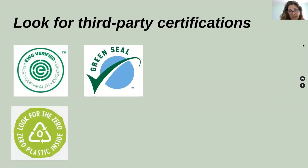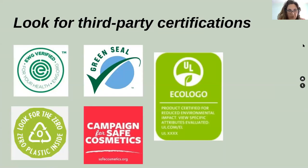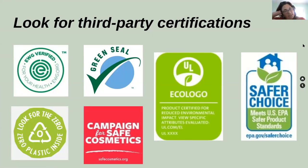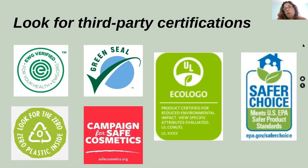For cleaning products, the third-party certifications to look for are EWG, Green Seal, Eco Logo, and Safer Choice — which is the EPA certification and probably the one you'll most commonly see on cleaning products. Most grocery stores that sell green cleaning products have at least one brand with one of these seals. The zero plastic and Campaign for Safe Cosmetics logos are more for personal care products. Look hard at the bottle — these seals aren't very big, maybe a half inch across. But if you're reading the label and paying attention to what you're buying, you'll see them.